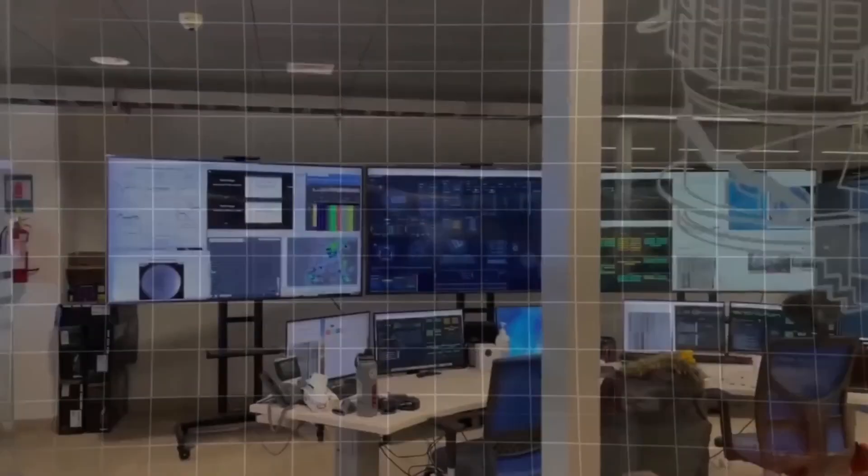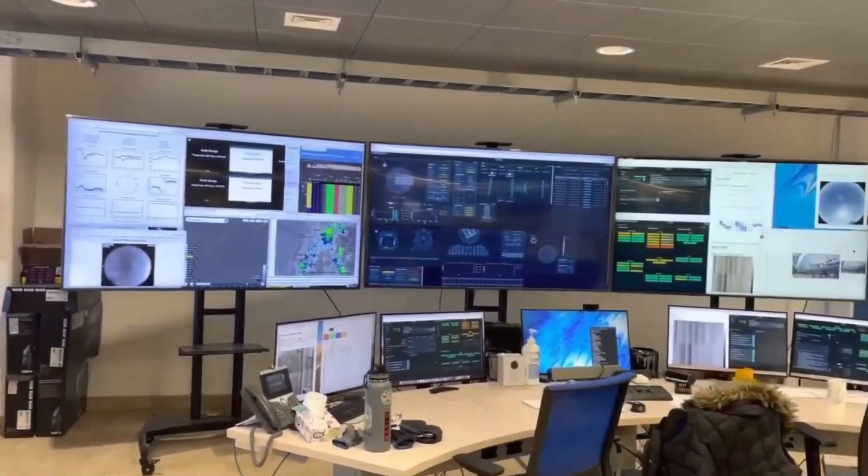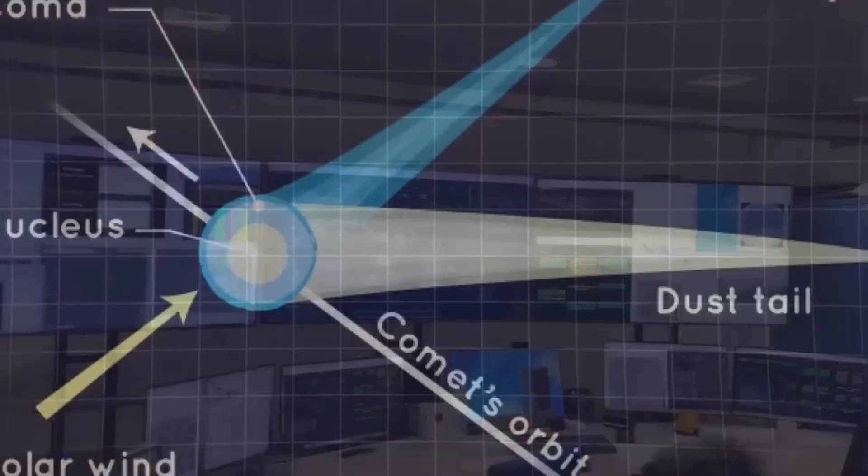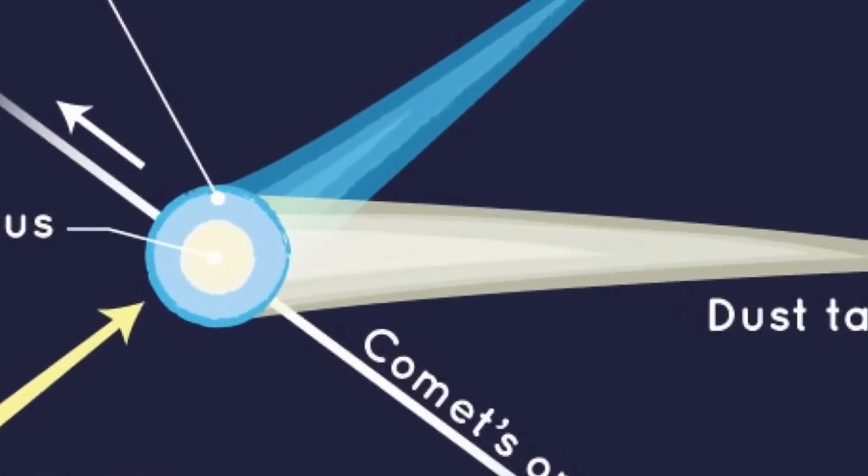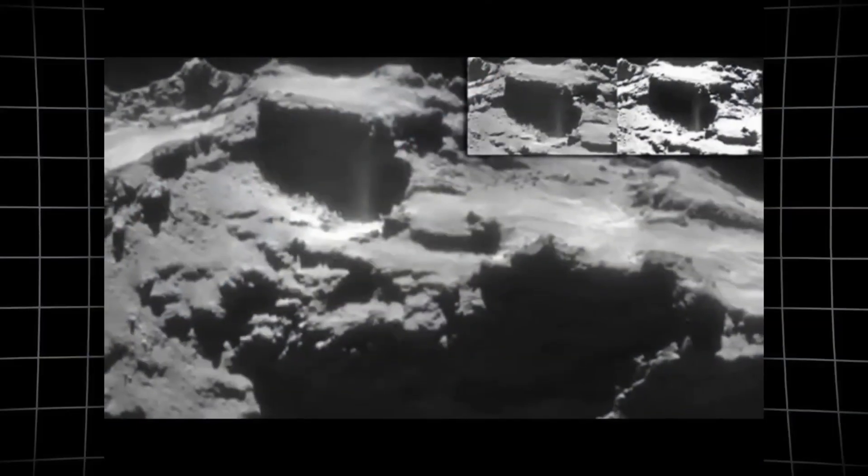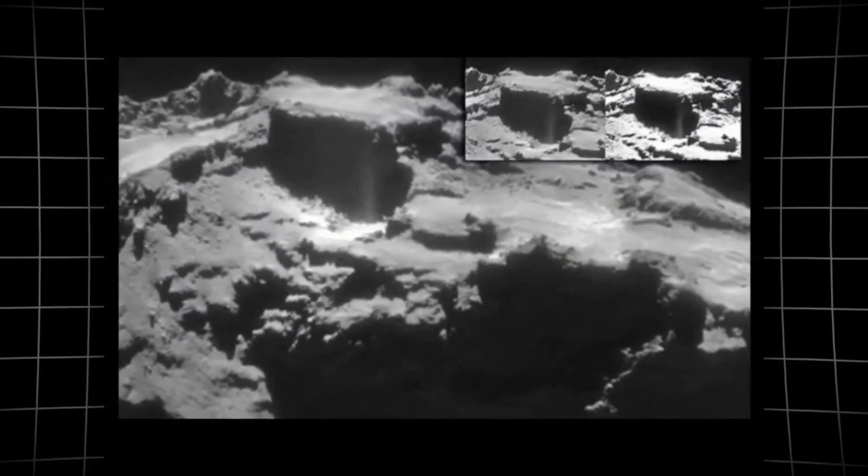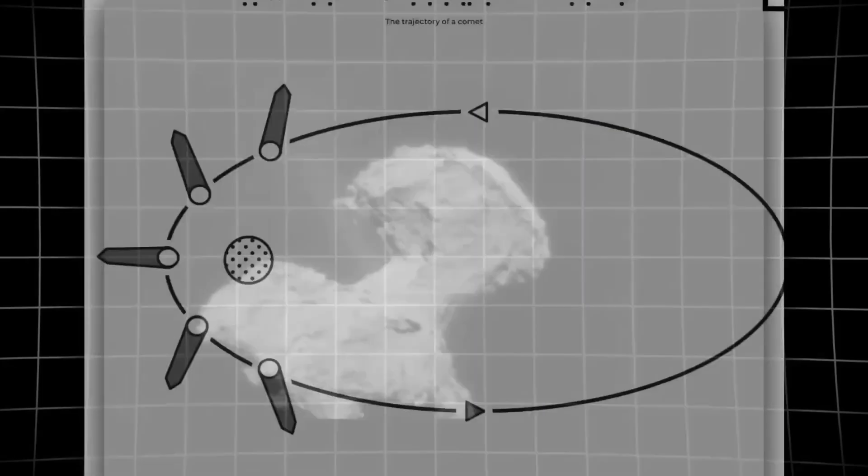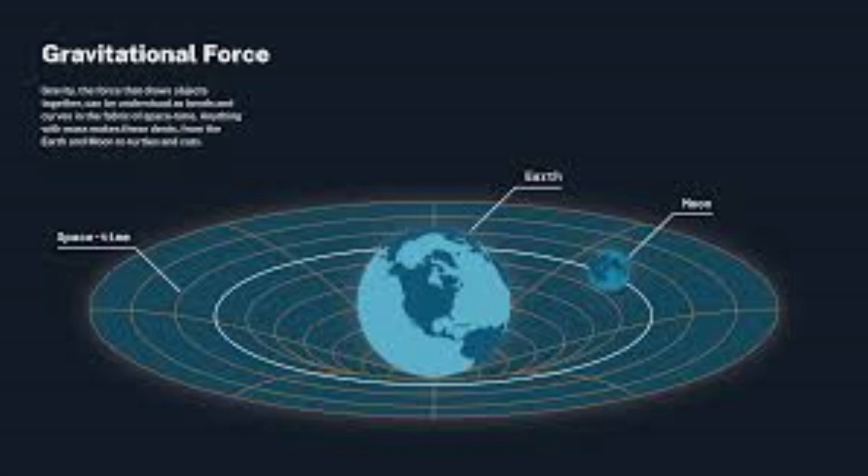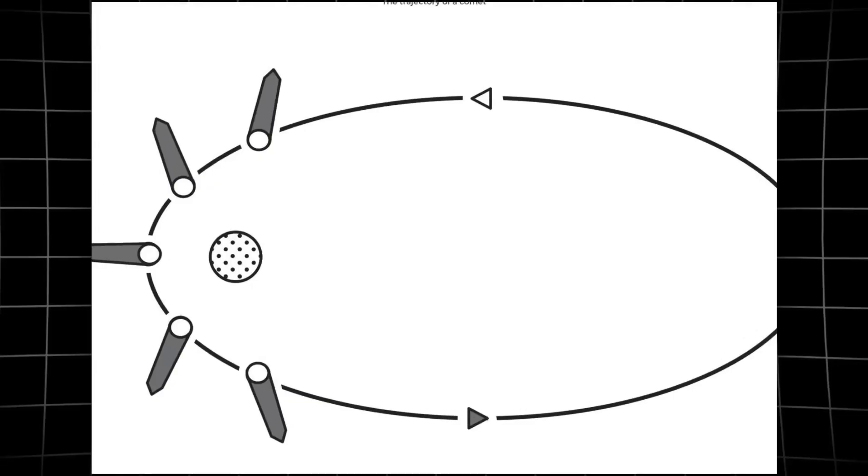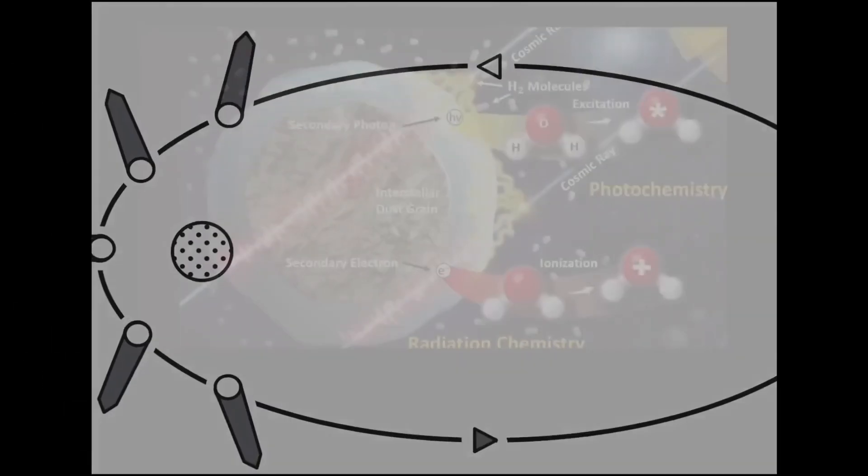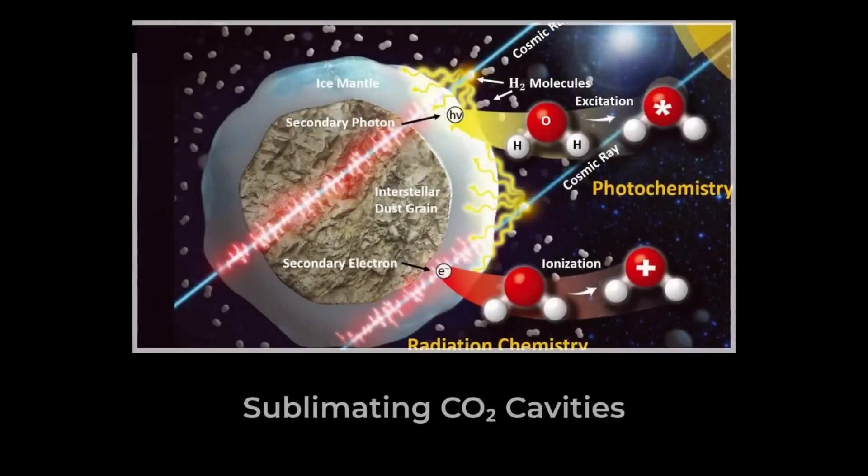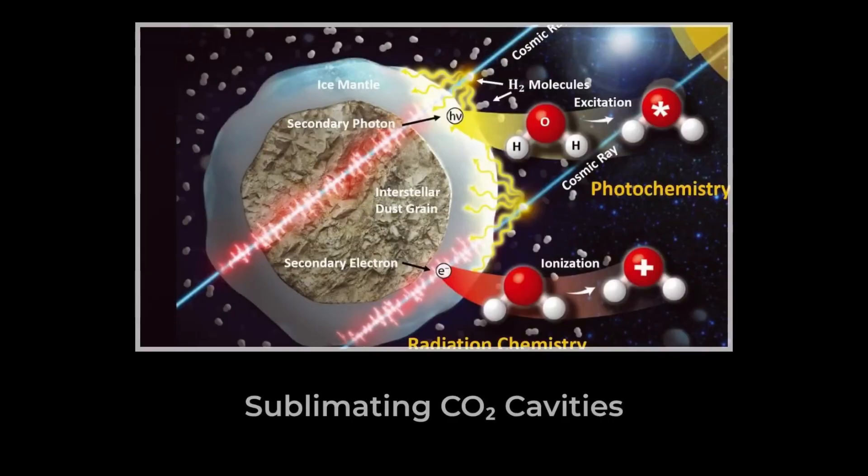The debate over what propels 3I Atlas has fractured the astronomical community. One camp clings to the classic physics of comets: they argue that volatile ices, dormant for eons, are now being heated by the sun, erupting into asymmetric jets that gently nudge the nucleus off its purely gravitational path. In this view, every non-gravitational twitch could be traced back to a pocket of carbon dioxide or nitrogen ice bursting free, sending a faint, invisible plume into the vacuum of space.